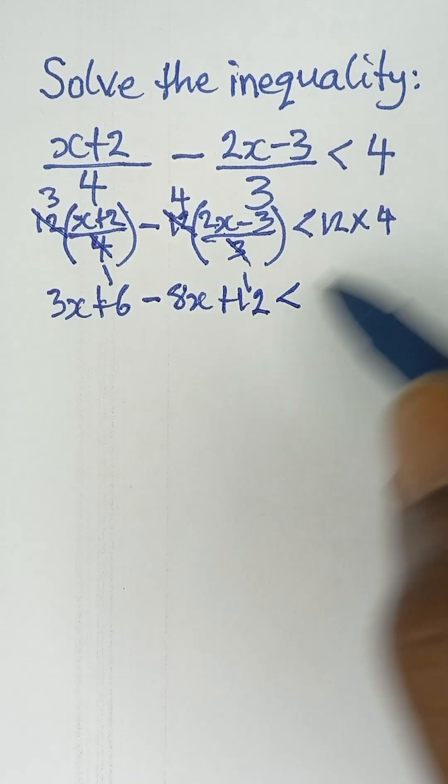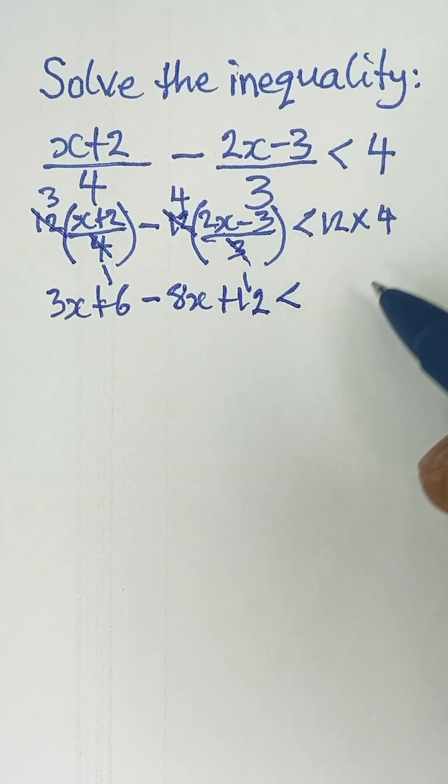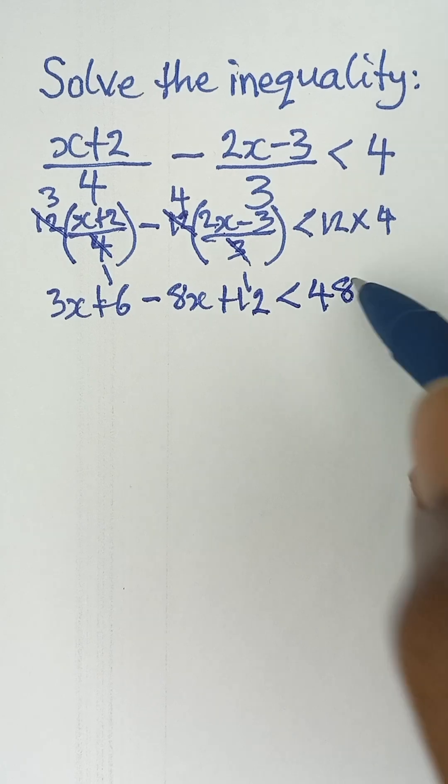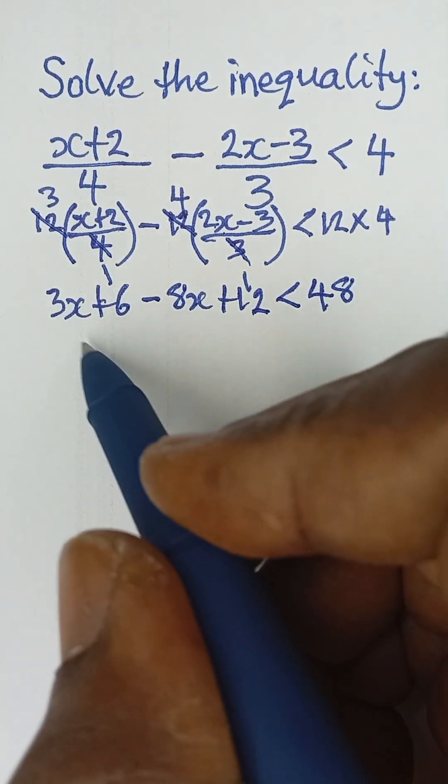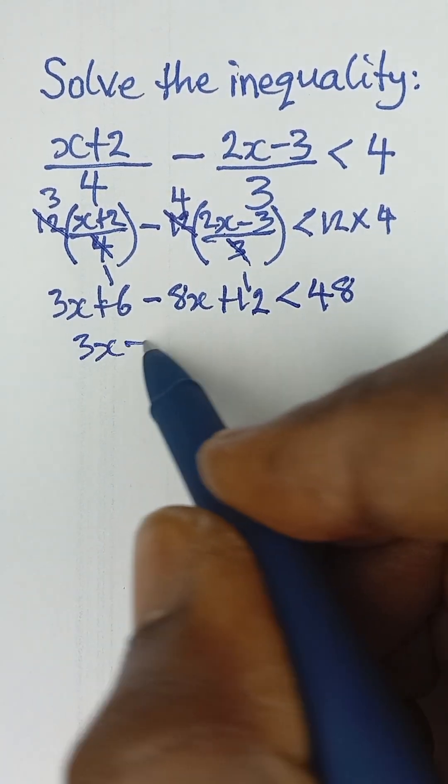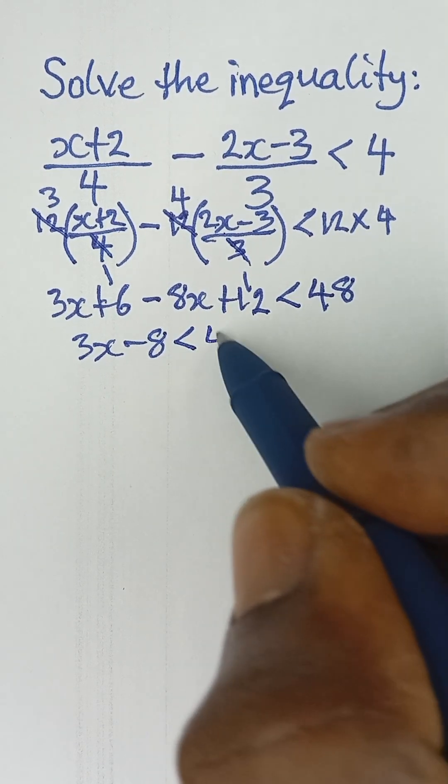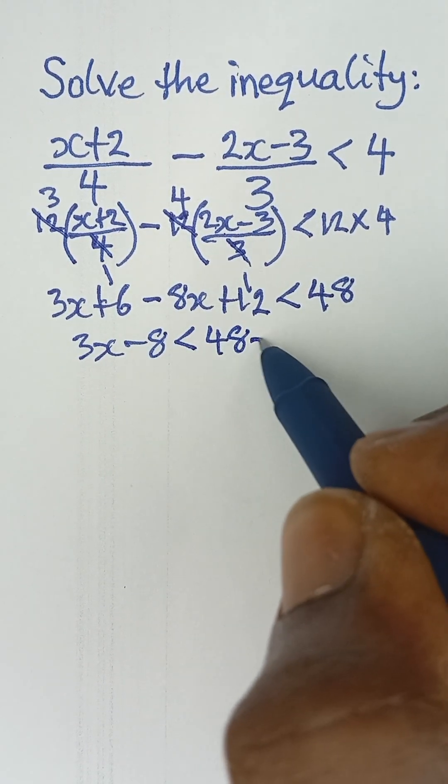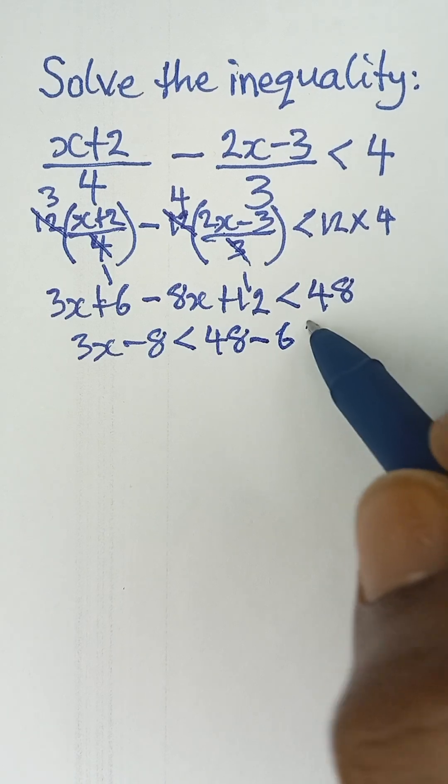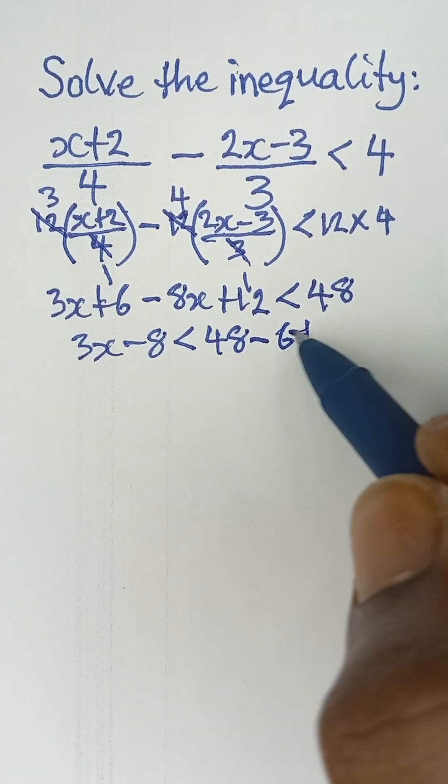And then it is less than 12 multiplied by 4 is 48. So we can now take like terms.